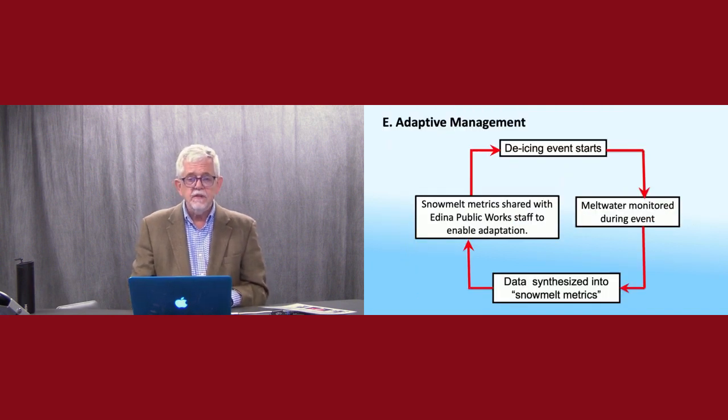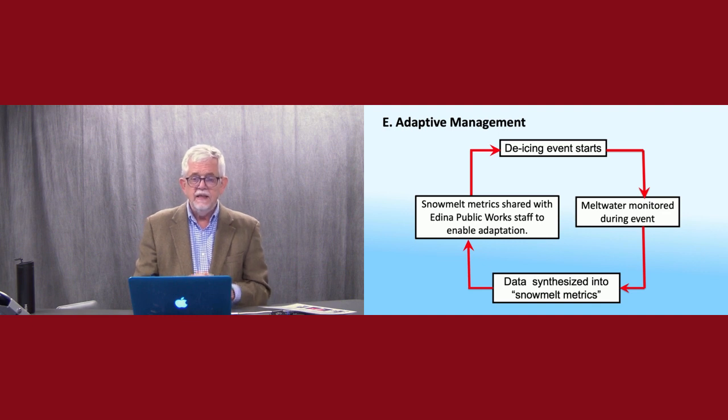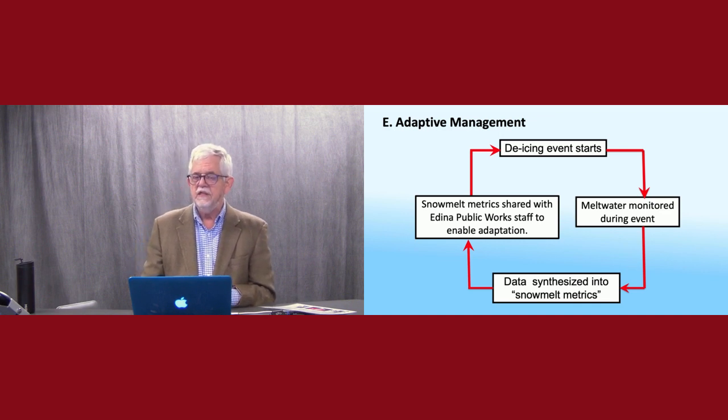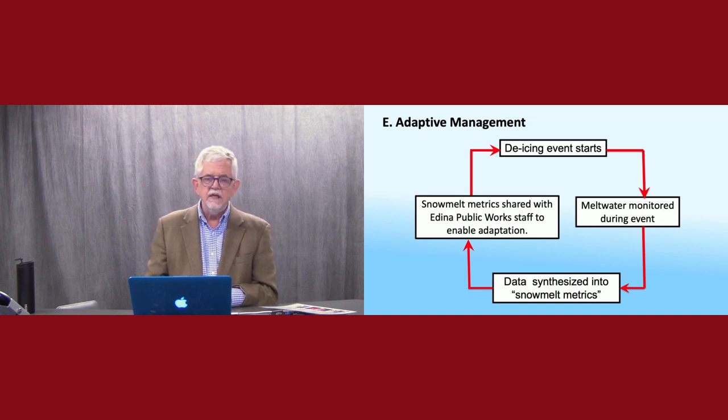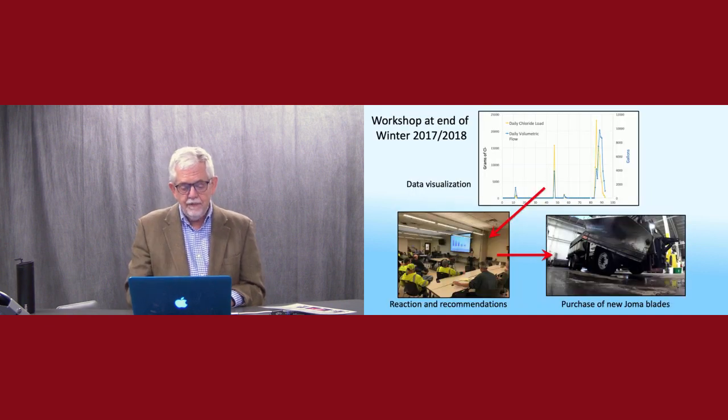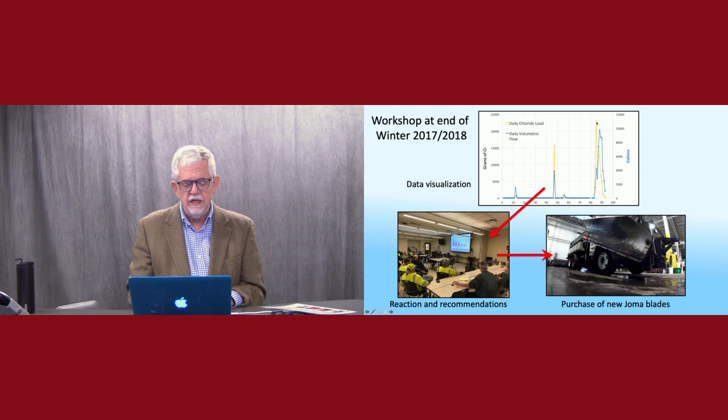Now the adaptive management part. This was, I'd say, the fun part. This is the same slide I used in the first talk. You have de-icing events starting. We monitor the meltwater. The data is synthesized into these snowmelt metrics. And we share these metrics with the Edina Public Works staff. And here's kind of what it looks like in real life. This is from our first-year presentation. This is a huge chloride spike. I think most of the loading for the first year came off this one spike, which was a winter mix event.